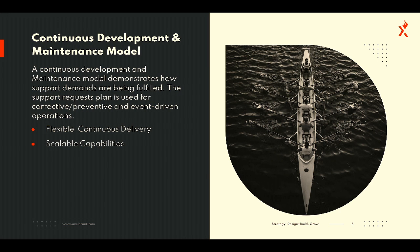Next is scalable capabilities. If you're maintaining the support model, make sure you have scalable capabilities. Developers should be comfortable with context switching — people have a wrong myth about context switching and fear it, but even as a project manager you switch from one call to another. Make sure when hiring development team members for the support model you assess their capability for context switching.